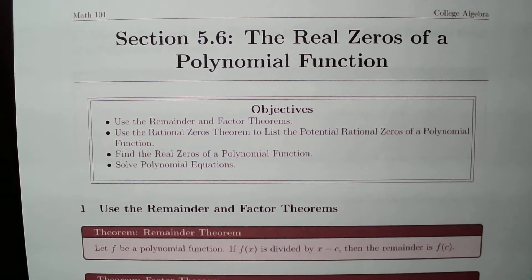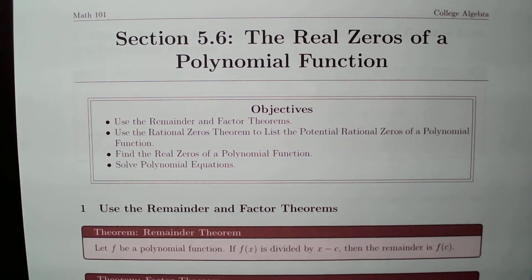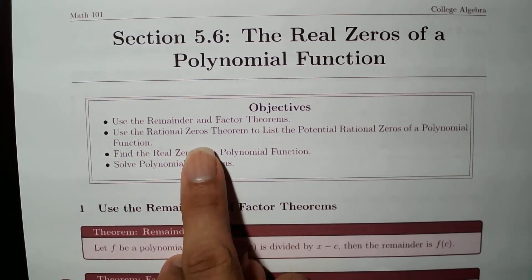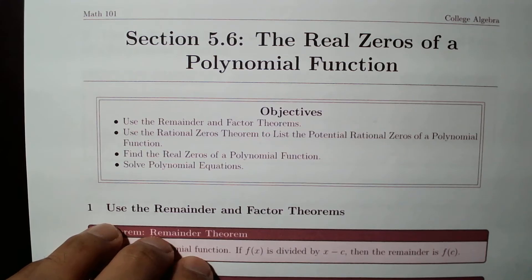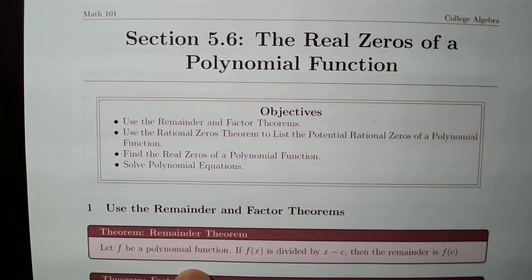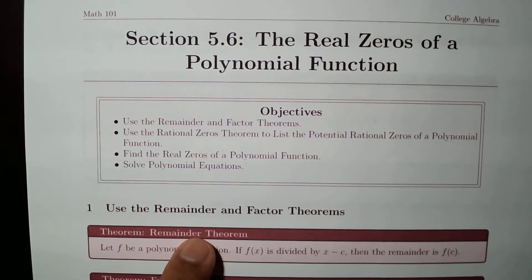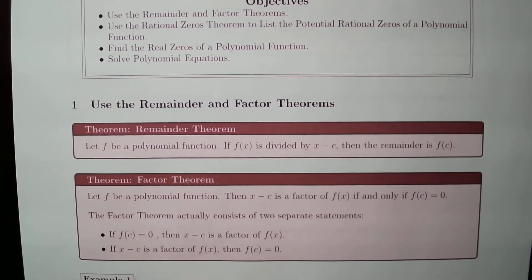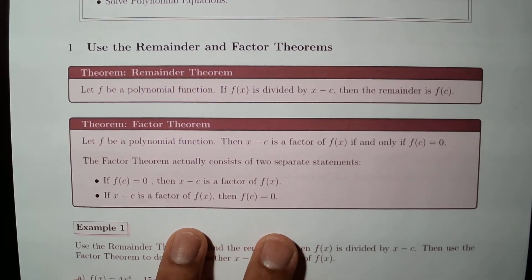In this video we go over section 5.6, the real zeros of a polynomial. In this section we will review the remainder and the factor theorem, then use the rational zero theorem — also known as the rational root theorem — to list all potential zeros of a given polynomial function. Then we will use that theorem to find the actual zeros or actual roots and apply that to solve polynomial equations.